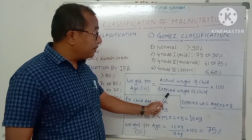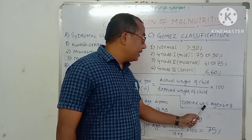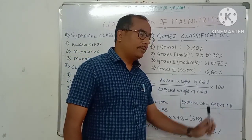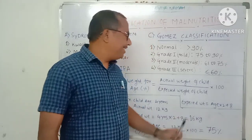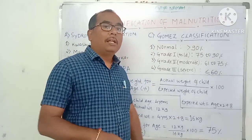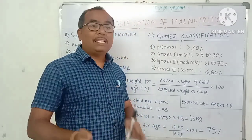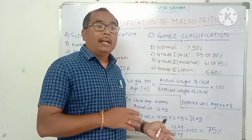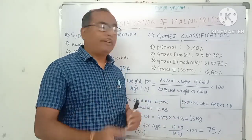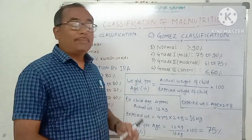How to calculate the expected weight of a child? Expected weight of child = (age × 2) + 8. The expected weight depends on the age of the child. Note that this formula applies differently if the child is less than 1 year or more than 10 years.